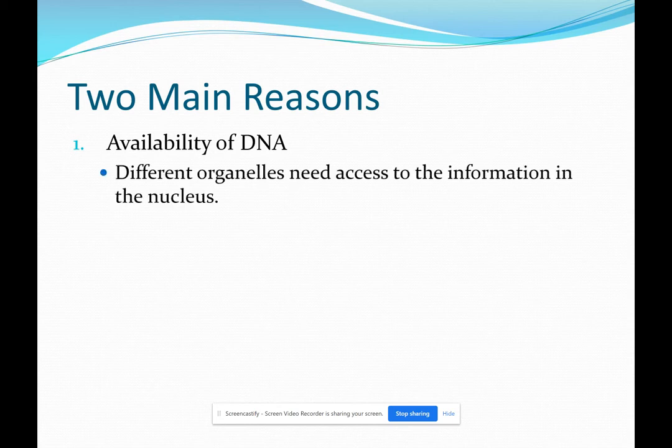You guys realize from studying cells that certain organelles need access to the information, need access to our DNA. You know that because ribosomes use the DNA's information to make a simple protein which then goes to the rough endoplasmic reticulum, which then goes to the Golgi apparatus and then becomes a finished protein. So ribosomes are a great example of organelles that need to access the genes in the nucleus.